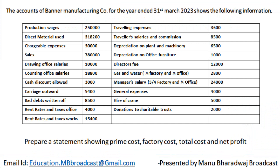If you observe the question, there are two types of salaries: drawing office salaries and counting office salaries. Drawing office salaries should be considered in factory overhead, and counting office salaries should be considered in office overhead, because it is a banner manufacturing company. Some people will be hired to design the banner, so they will be working under factory.